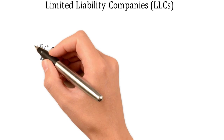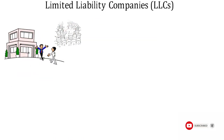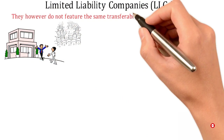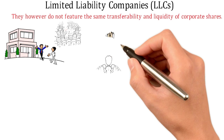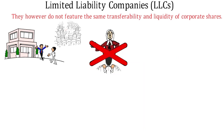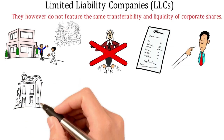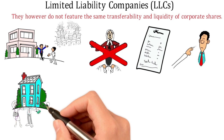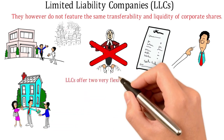LLCs were created to provide the advantages of S corporations without limitations to the shareholders. They however do not feature the same transferability and liquidity of corporate shares. In an LLC, like a corporation, the owners do not face personal liability for business debts or legal claims made against the company. It's important to note that you may become personally liable for certain debts if you sign a personal guarantee — for example, most landlords will require owners of a new business to personally guarantee lease payments.